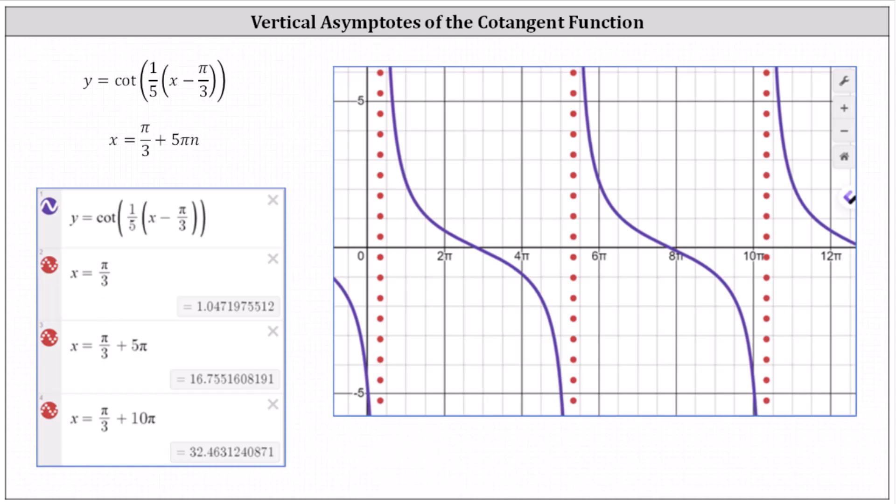When n is one, we have x equals pi divided by three plus five pi. When n is two, we have x equals pi divided by three plus ten pi, and so on. Notice these equations are giving us the vertical asymptotes for the given function. I hope you found this helpful.